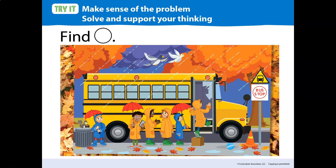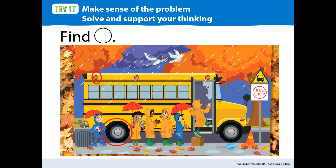Did you find a big circle? I found a big circle. I found the tire right here, and I put a ring around it to show that I found the big circle. I found one of the lights right here — that's a little circle. You might have found different ones, and that's fine. There are different answers to this problem. Maybe you found this is the big circle, and this is a small circle. There are all different answers to this problem.